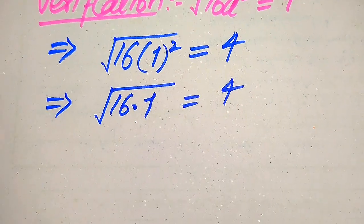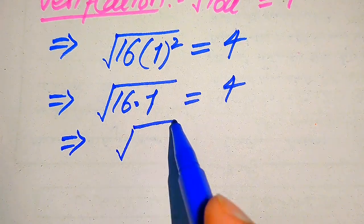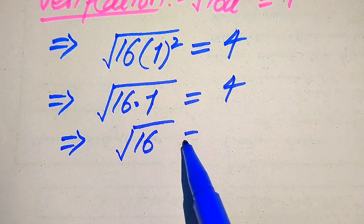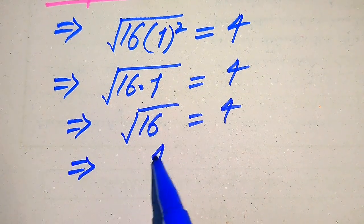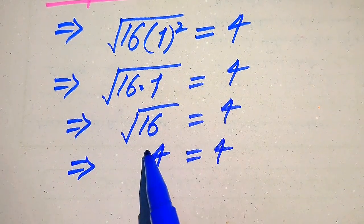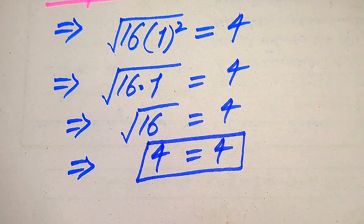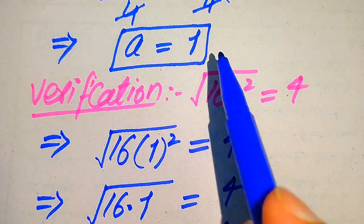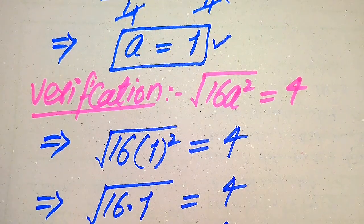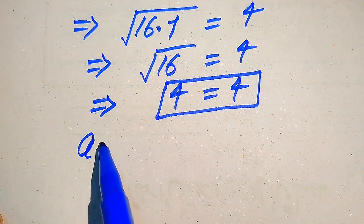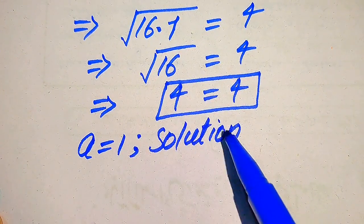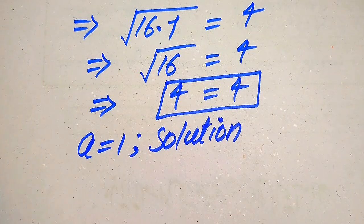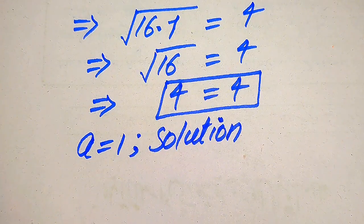We have the square root of 16 times 1 squared, which becomes the square root of 16 times 1, which is the square root of 16, equals 4. We know that the square root of 16 is 4, so left hand side equals right hand side. This means a equals 1 satisfies the given question statement. We conclude that a equals 1 is the solution of the given equation. The roots which cannot satisfy the given question statement are called extraneous roots.